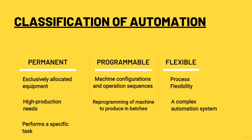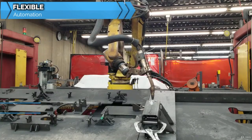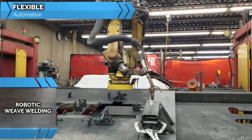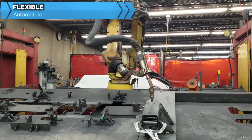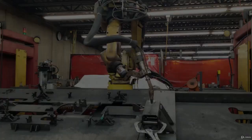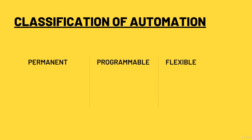It is a complex automation system that can perform comparatively more tasks. It is flexible to accommodate changes in product variety, batches, and production schedule. The production of different products or a mix of products is uninterrupted and flawless up to a certain extent.